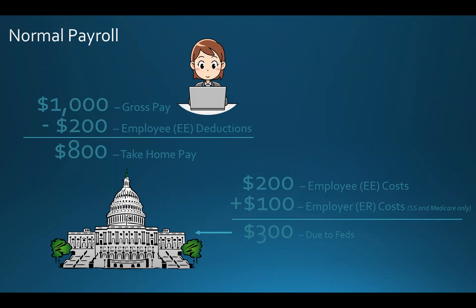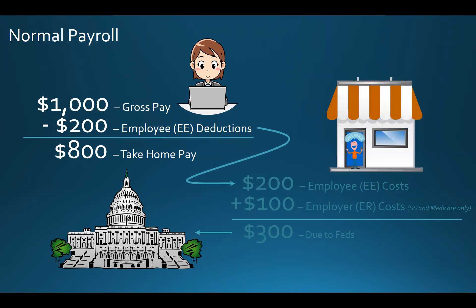In a normal payroll, say I earn $1,000 of gross pay in a pay period. I sadly owe taxes on my earnings, so my employer takes out $200 from my paycheck for my federal income tax and contributions to Social Security and Medicare. That gives me $800 in take home pay. Now, my employer has collected my taxes, and they have to match the Social Security and Medicare contributions at their own expense.